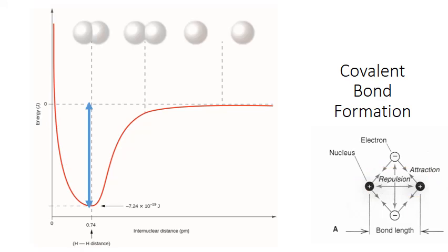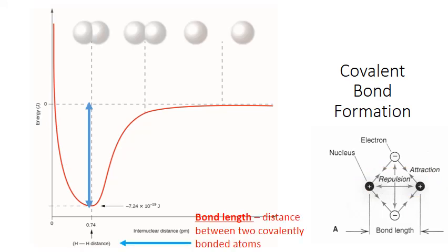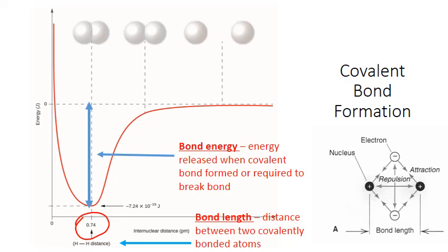The length of any covalent bond corresponds to the distance at which the potential energy between the two bonding atoms is at its minimum. So for two hydrogen atoms, this is 0.74 picometers. The bond energy is the amount of energy that's released at that minimum. It's also the energy required to pull those two atoms apart again and break that covalent bond.